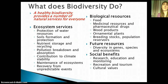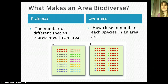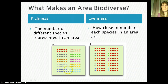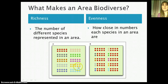Biodiversity is obviously pretty important, so we want to figure out a way to quantify it. There are two things that can make an area biodiverse. The first is called species richness, which is simply the number of species in an area. If represented by colored dots where each color is a different species, in group A we'd count 10 different species — that's our species richness.